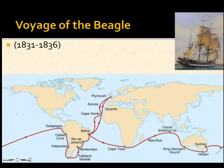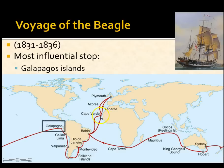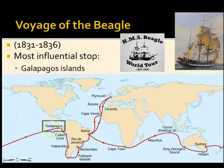Darwin went on a voyage of the HMS Beagle from 1831 to 1836. His route took him down to South America, with stops including the Galapagos Islands, Australia, South Africa, back to South America, and then back up to Europe. Of those stops, the most influential was the Galapagos Islands, about 600 miles off the coast of Ecuador.